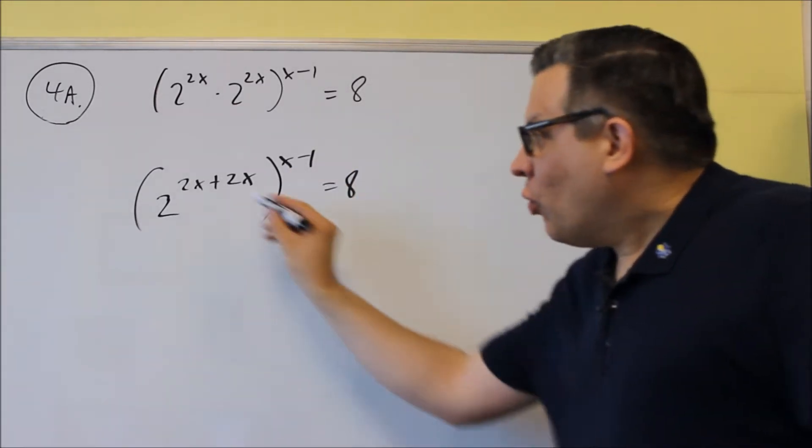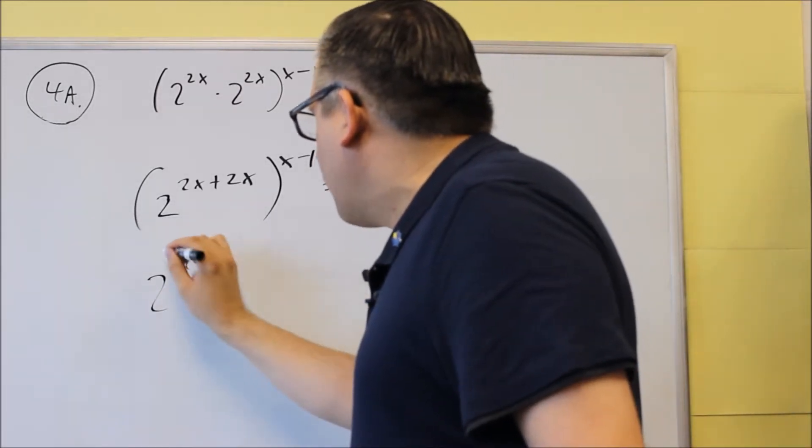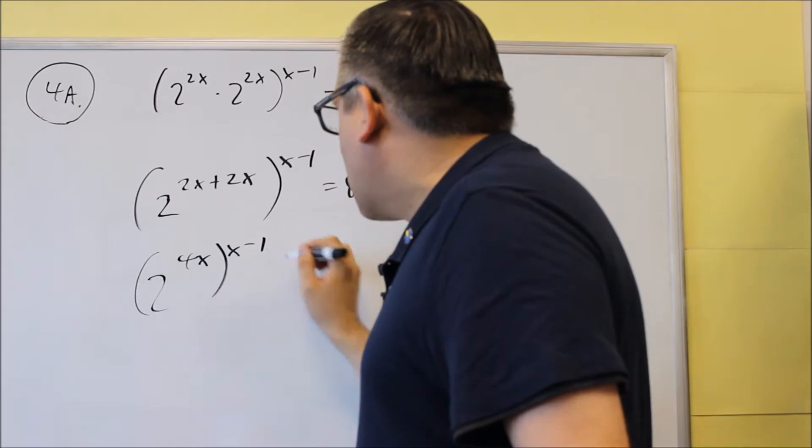So that's the first step. We can add these together, and you would get 2 to the 4x raised to the x minus 1.